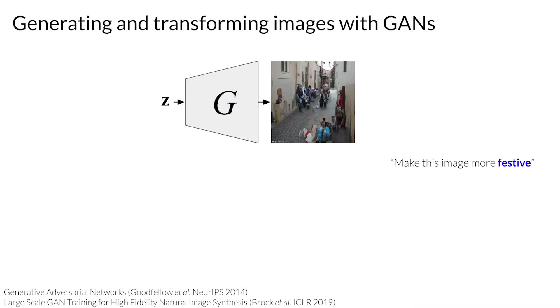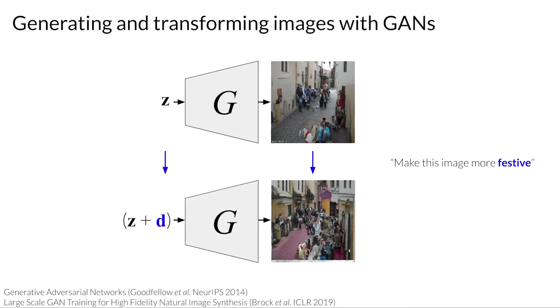One way to do so is to transform the input to the GAN along some direction in its latent space. And as you can see, now more people and decorations have been added. But the question is, what choice of D produced this festive change? And furthermore, what is the full vocabulary of transformations that this GAN could make to an outdoor market scene that would be meaningful to human observers?